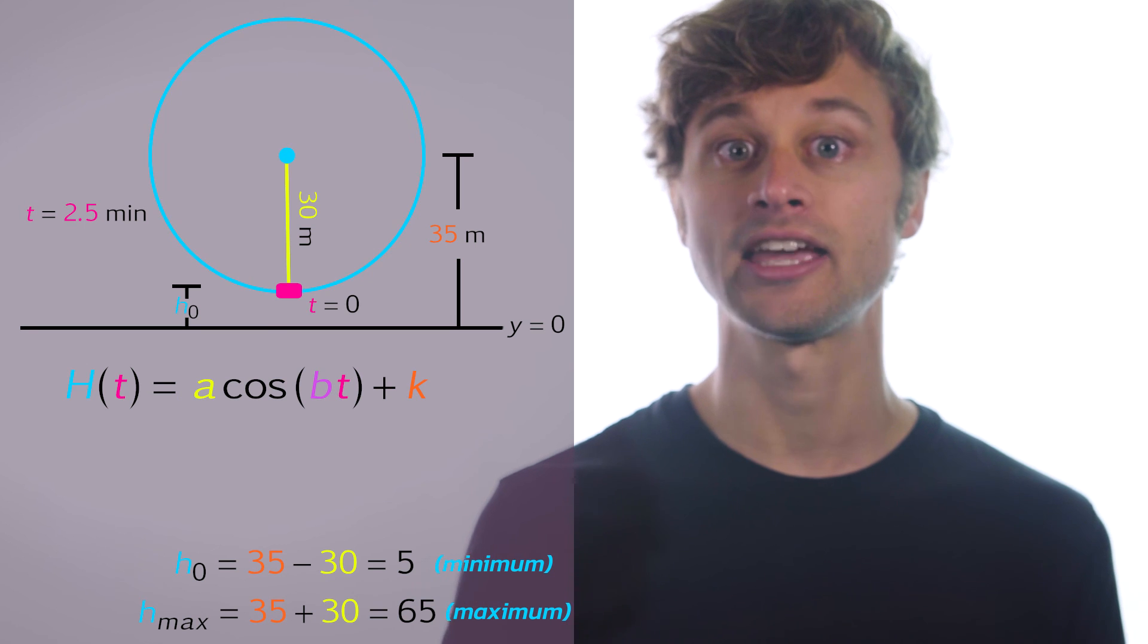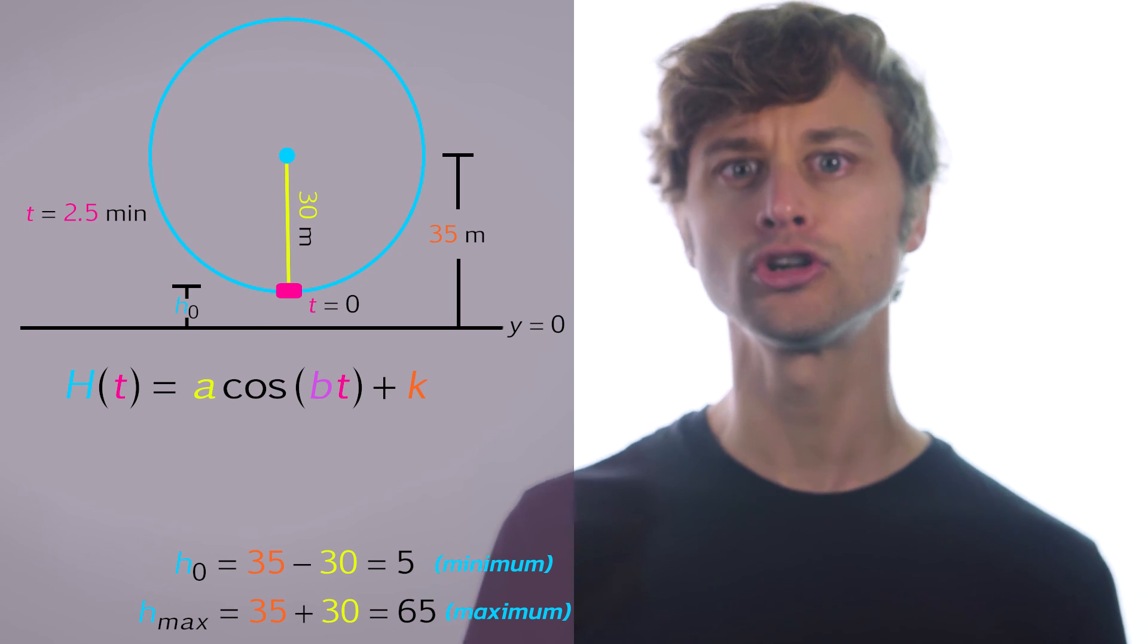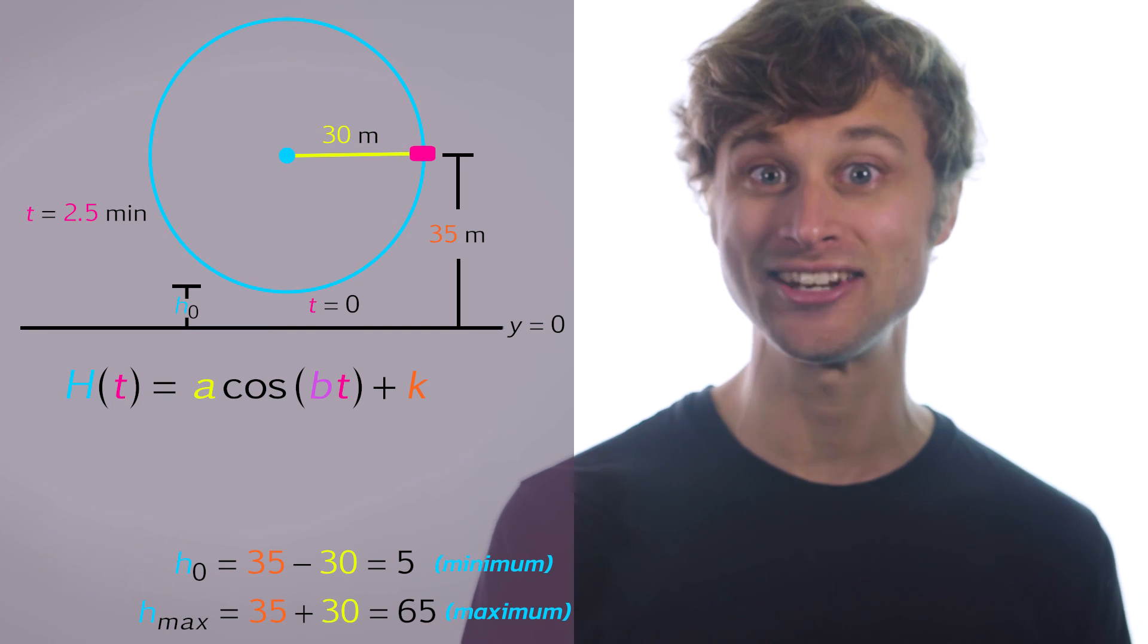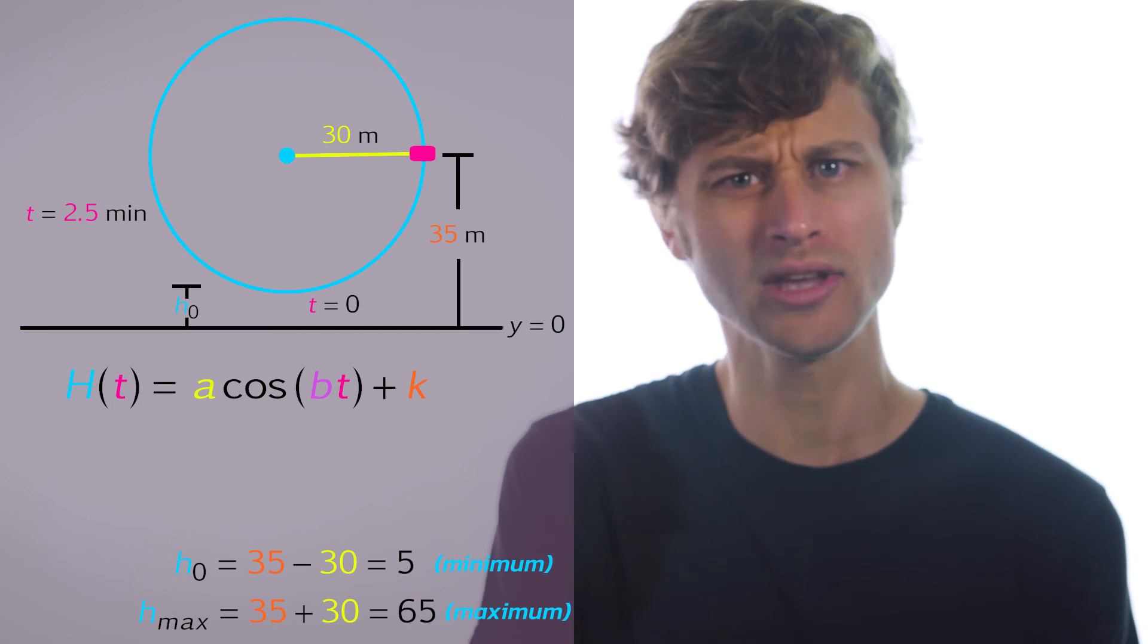Let's take a look at our k value. The vertical shift of this function is up the distance which is the height of the center of the Ferris wheel above the ground, so k is just equal to 35.